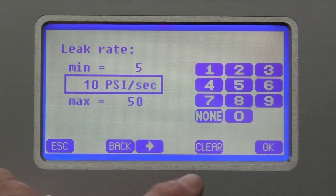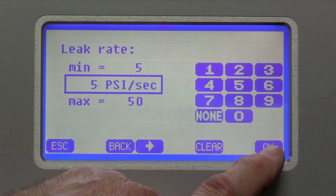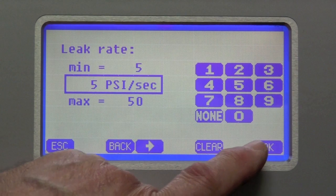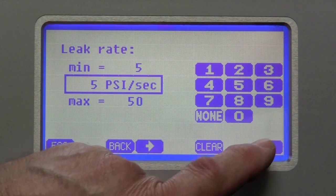We can set the leak rate here and we'll set it to 5 PSI. And that's 5 PSI per second. So at some point, if the pressure drops at a rate of 5 PSI per second, it will detect the leak.